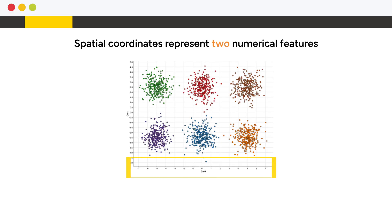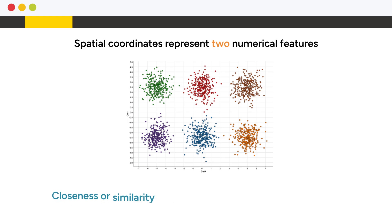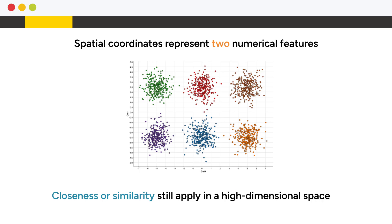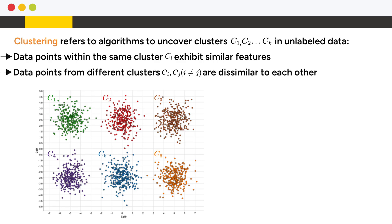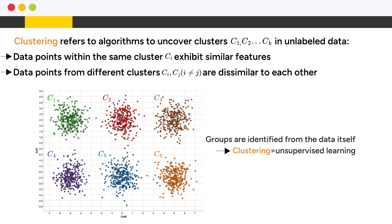In this example, spatial coordinates represent two numerical features. But even with many features, the idea of closeness or similarity still applies in a high-dimensional space. Clustering refers to algorithms that uncover such clusters in unlabeled data. Data points belonging to the same cluster exhibit similar features, whereas data points from different clusters are dissimilar. Identifying these clusters leads to segmenting data points into distinct groups.